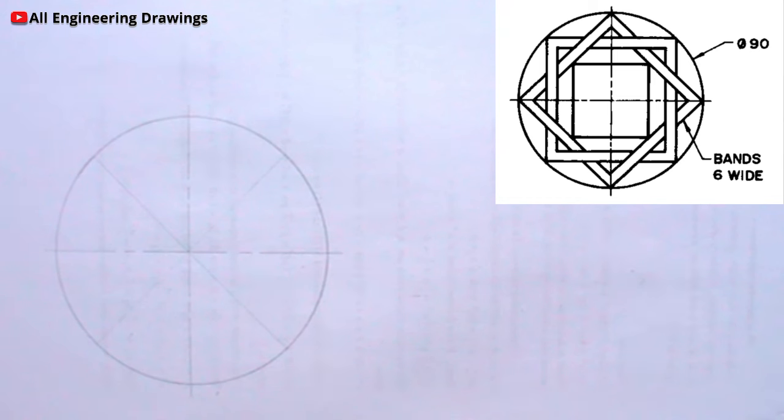These lines should be as faint as possible and they should be done using a T square. Next is to draw lines joining points where the 45-degree lines of division intersect the circumference of your cycle.